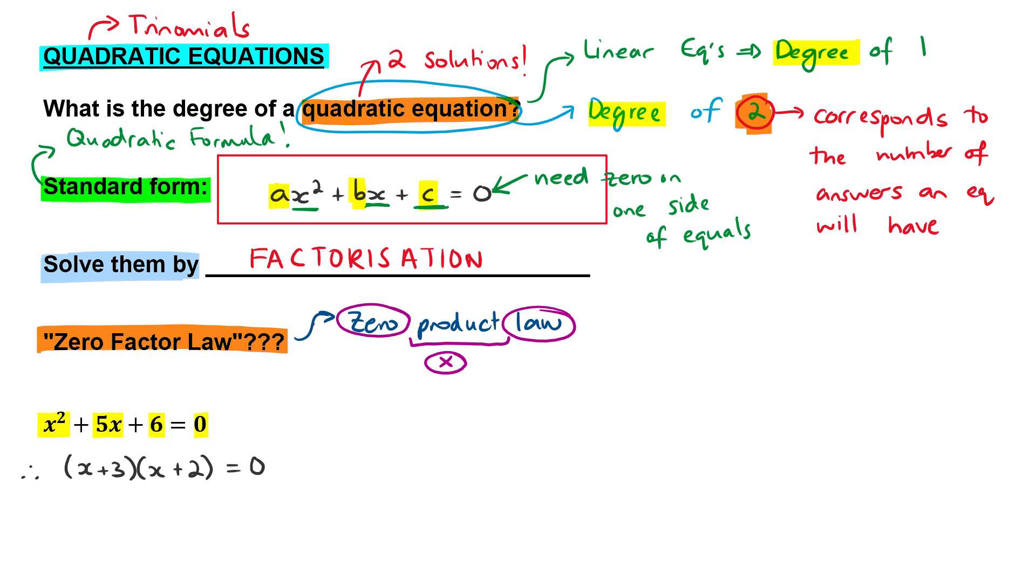Now do you see how this is basically two brackets, two different brackets that are multiplied together? So basically, what we've got here is a product of two brackets.